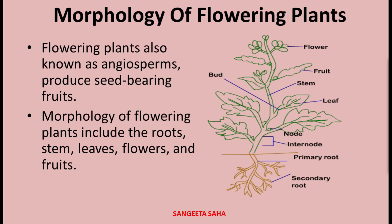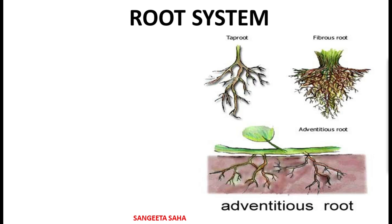Now we are going to learn about root today. Root is basically the descending portion, or rather the underground part of the plant. It is non-green or brown in color, and unlike stems, roots are not differentiated into nodes and inter-nodes. Roots do not bear leaves and true buds. Usually the root tip is protected by a root cap and it also bears unicellular root hairs, as you can see from the diagram.